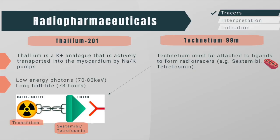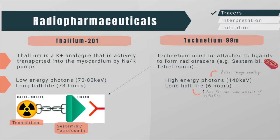Thallium emits a lower energy photon and has a longer half-life compared to technetium. The higher energy of technetium-emitted photons means fewer photons are stopped by the body and more arrive at the gamma camera, resulting in better image quality. The shorter half-life of technetium reduces patient radiation exposure and allows higher doses to be administered — approximately 10 times as much radioactivity with technetium can be injected compared with thallium for the same radiation dose. This is why thallium has largely been replaced by technetium-labeled radiotracers.